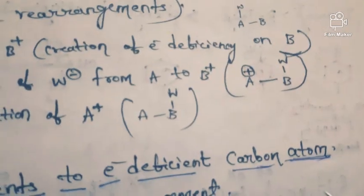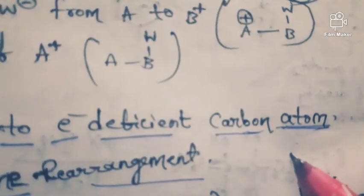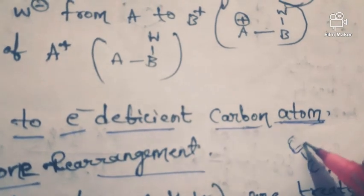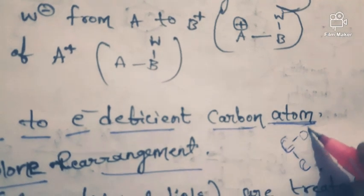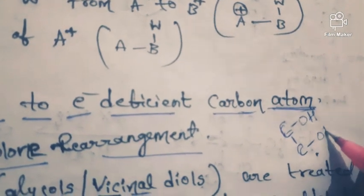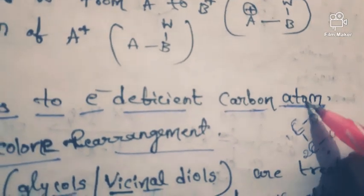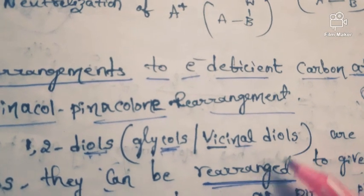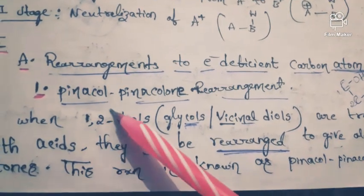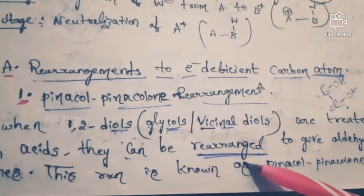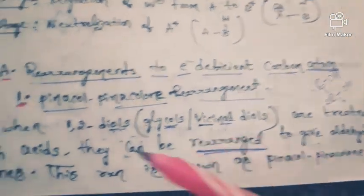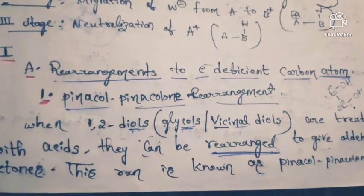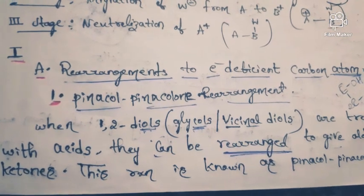When these 1,2-diols or vicinal diols are treated with acid, they can be rearranged to give aldehydes or ketones. This reaction is known as pinacol-pinacolone rearrangement. I will explain the mechanism so that you can easily understand.